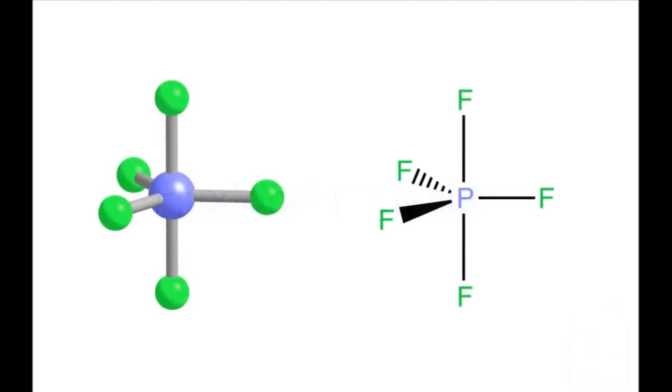In a trigonal bipyramid, the axial and the equatorial positions are different from each other. This means that for the trigonal bipyramidal molecule phosphorus pentafluoride, there are two different PF bond lengths.